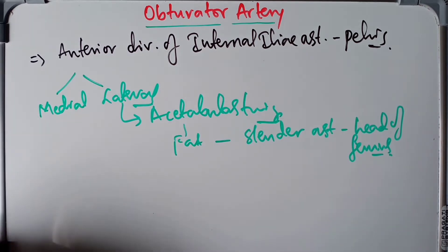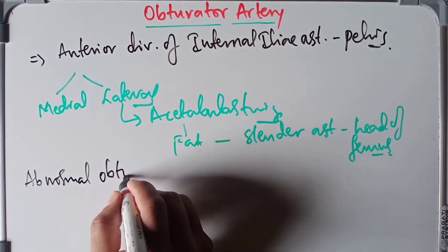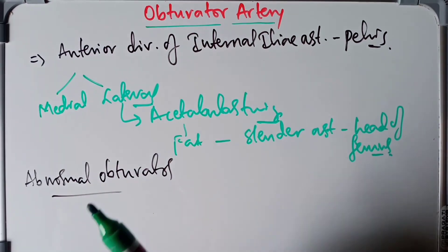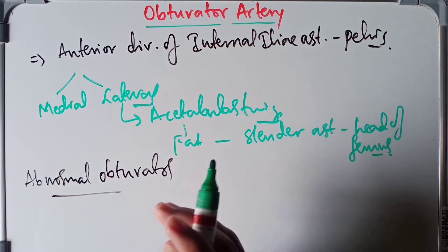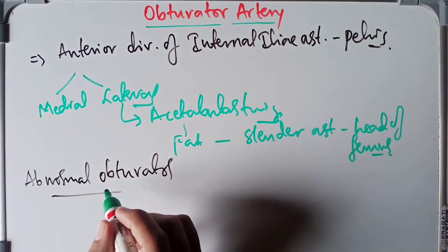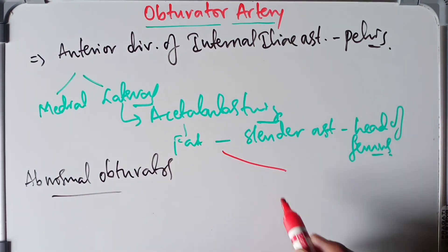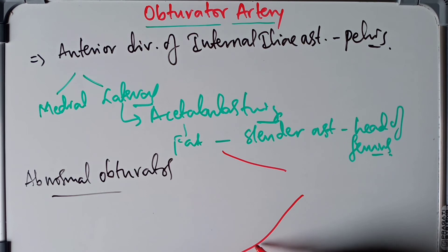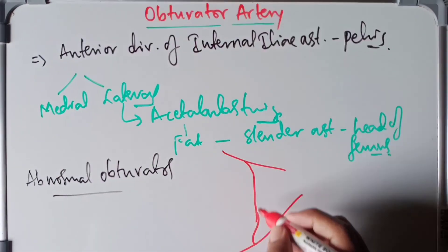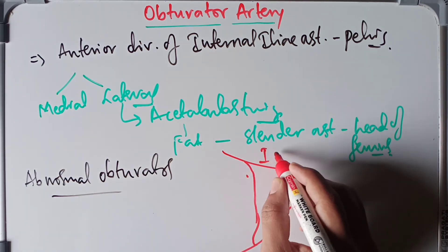Another important thing to remember is the abnormal obturator artery. Normally, a pubic branch of the obturator artery anastomoses with the pubic branch of the inferior epigastric artery. Sometimes this anastomosis is so large and well-developed that the obturator artery appears to be a branch of the inferior epigastric artery — this is what we call the abnormal obturator artery.